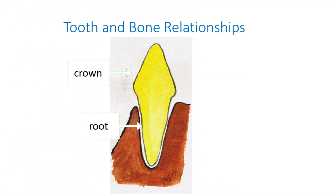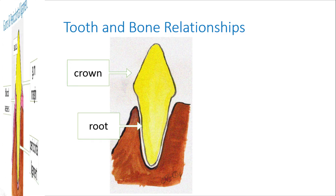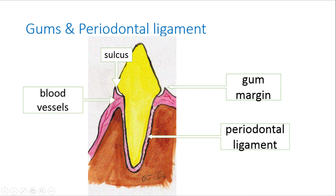First, let's go over the tooth and bone relationships. The tooth has a crown which you see above the gum line and a root that you and your vet should not see because it is covered by bone and gums. Here you can see the sulcus, which is a moat under the gums around the tooth. It should be about 0.5 mm deep in a cat and 2 to 3 mm in a small to medium sized dog and 4 mm in a very large dog.